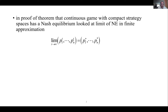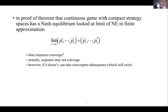Another question had to do with finding a Nash equilibrium as the limit of Nash equilibria in finite approximations. When I showed you that a Nash equilibrium exists in a continuous game, I did that by applying Nash's theorem to approximations and taking the limit. The question is: does this sequence of equilibria in approximation games converge? It may not converge, but if it doesn't, we just take a convergent subsequence, which will always exist.